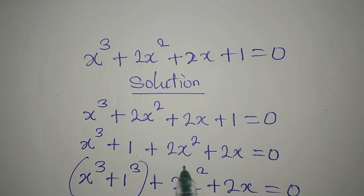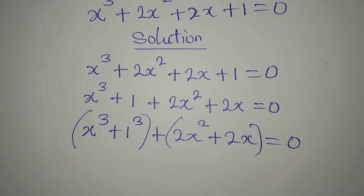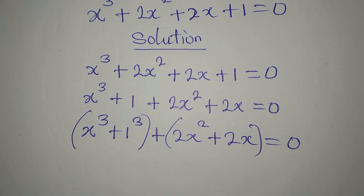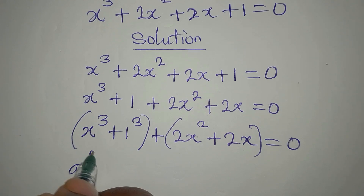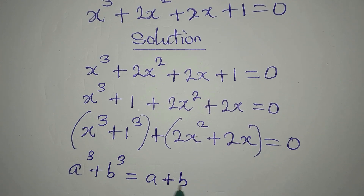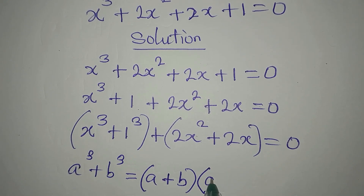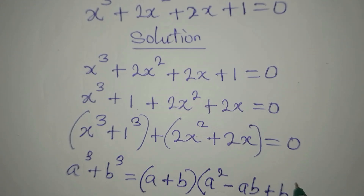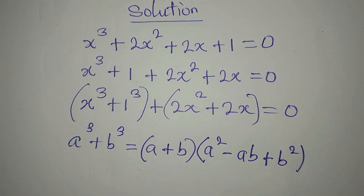If I group this and group this, does it change the equation? The answer is no. This 1 to the power of 3 is the same as 1. Now here we apply addition of two cubes. If you have a to the power of 3 plus b to the power of 3, this will be a plus b, times a squared minus ab plus b squared.